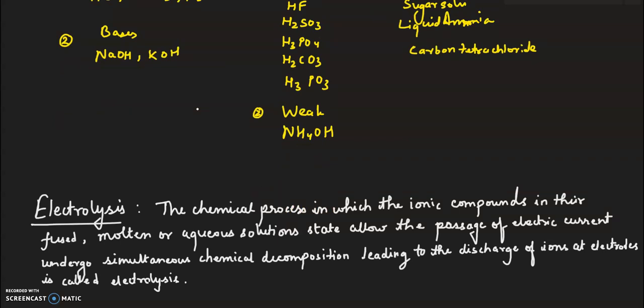Now we will study the definition of electrolysis. That is the chapter's name. The chemical process in which the ionic compounds in their fused, molten, or aqueous solution state allow the passage of electric current undergoes simultaneous chemical decomposition, leading to the discharge of ions at electrodes. This is called electrolysis.